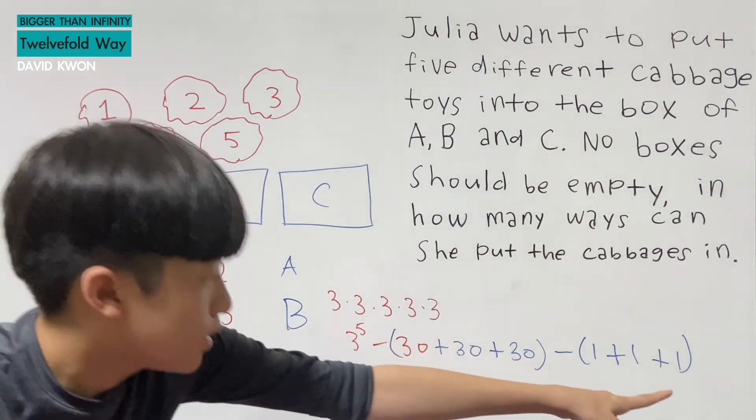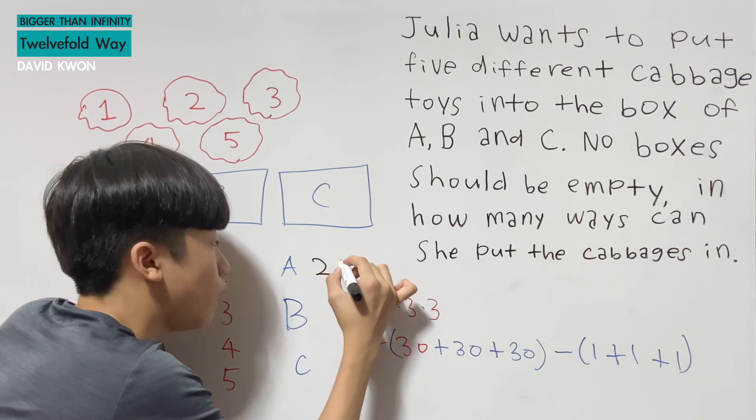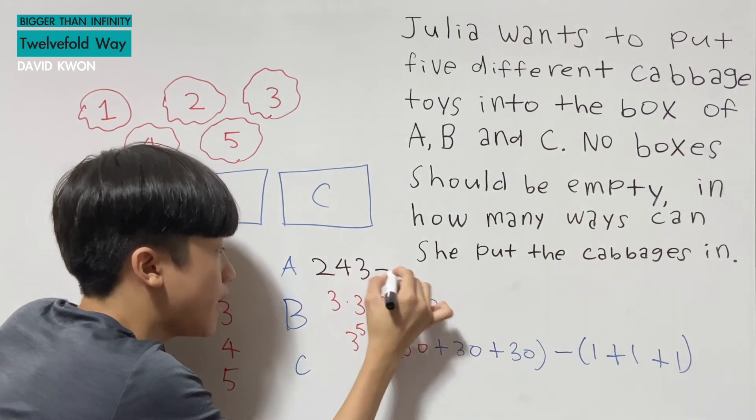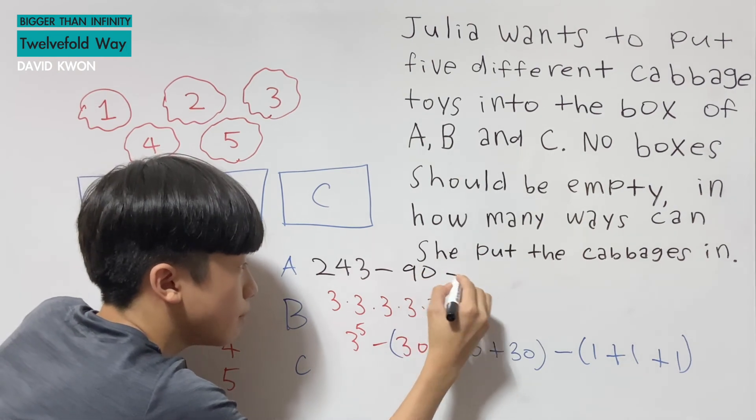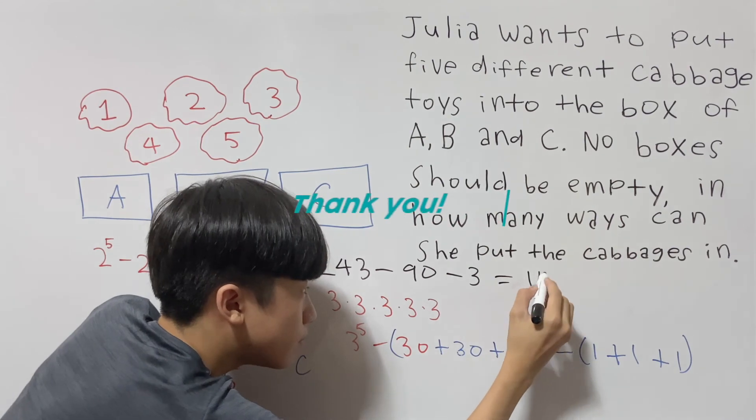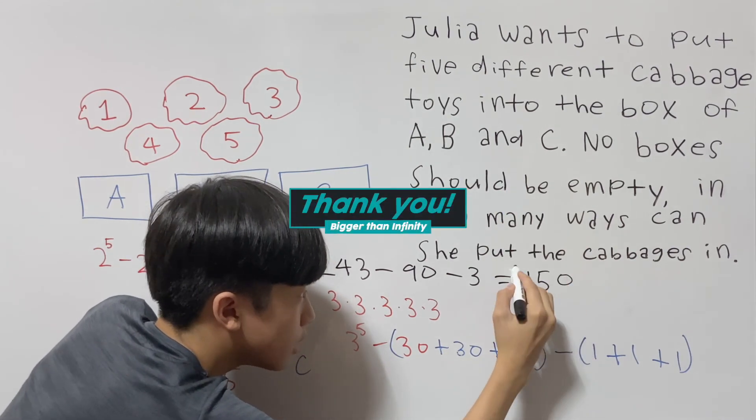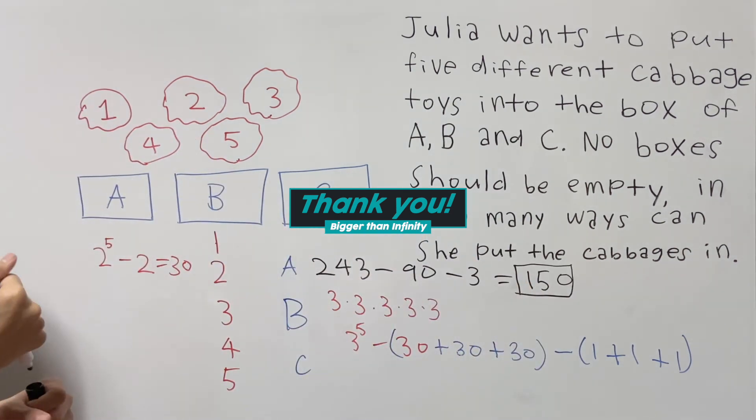So let's do this math. And that is just 243, minus 90, and minus 3. So we get 150 ways that Julia can put the cabbages in, in the box without any empty boxes.